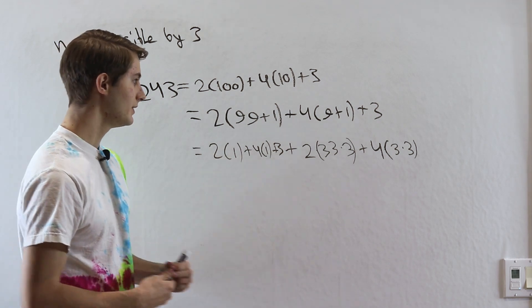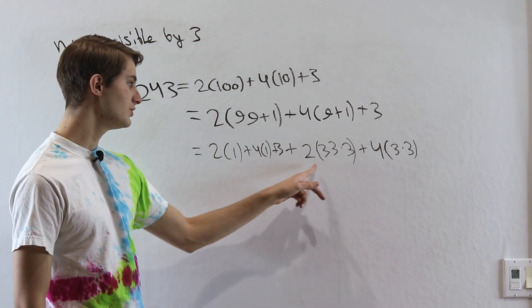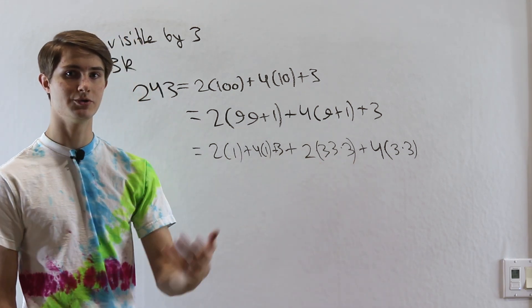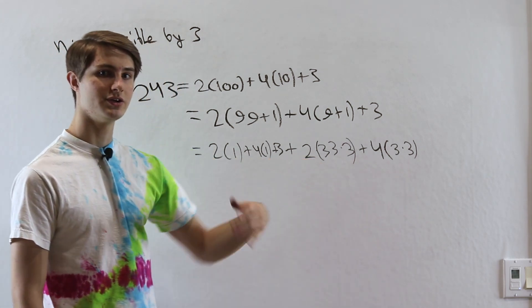Now what do we have over here on this side of our expression? Well 2 times 33 times 3, since we have that times 3 there, has to be a multiple of 3. 4 times 3 times 3 also has to be a multiple of 3.